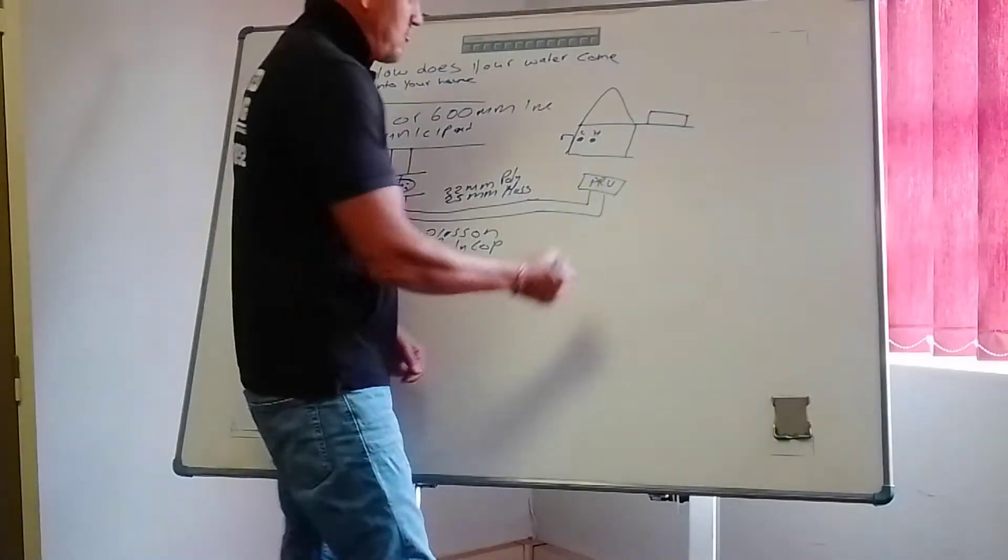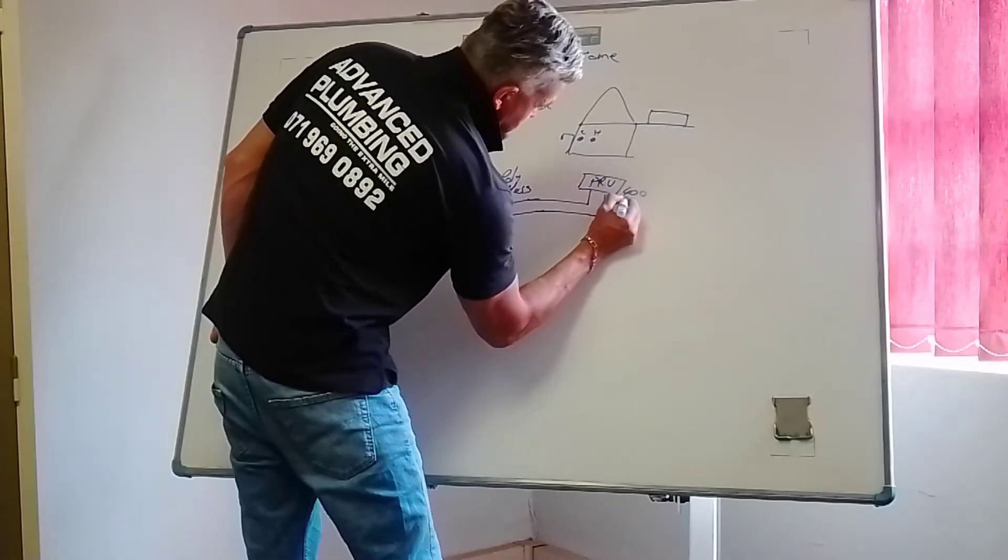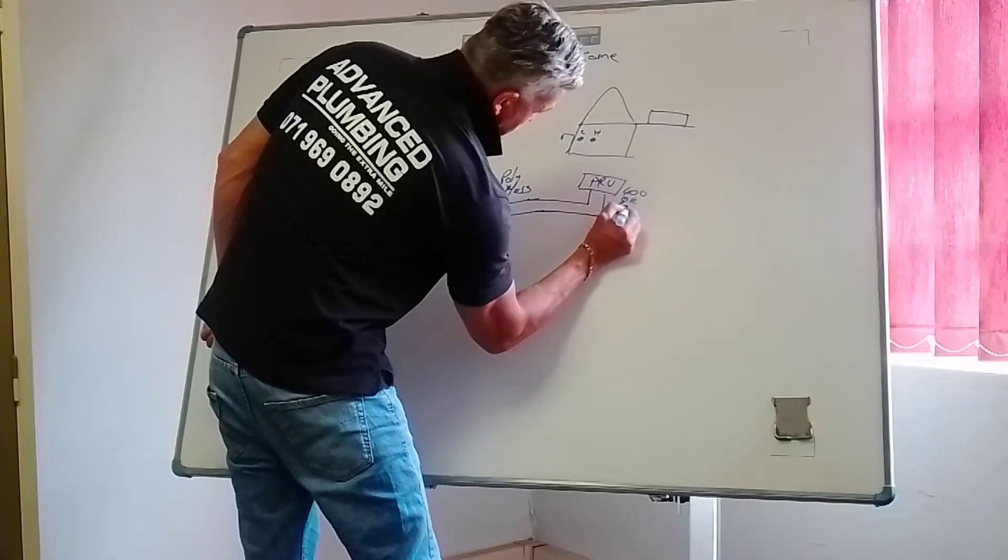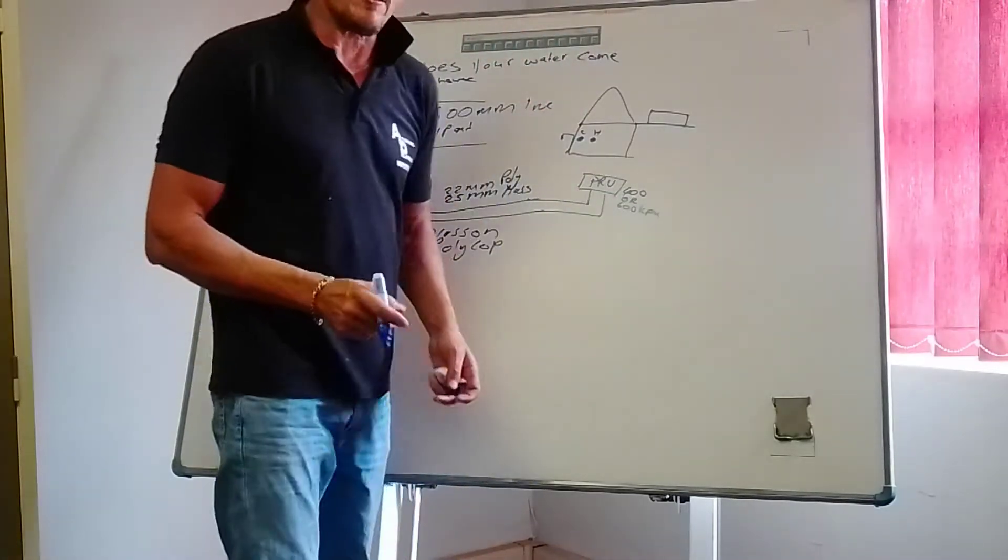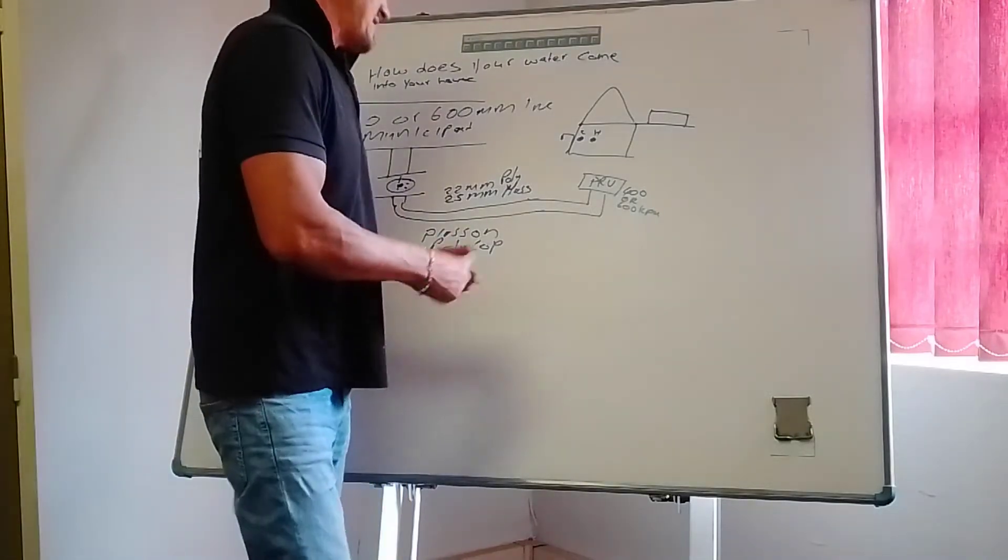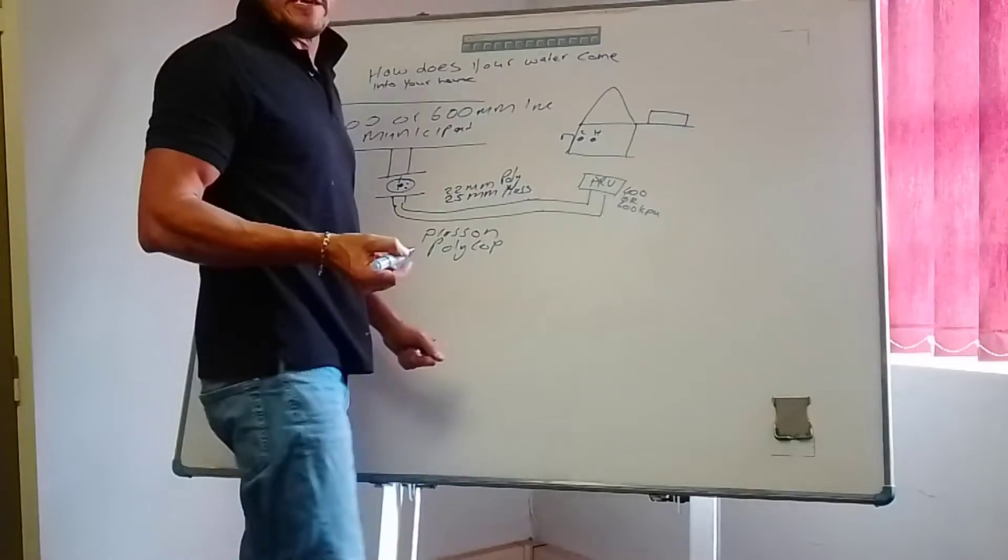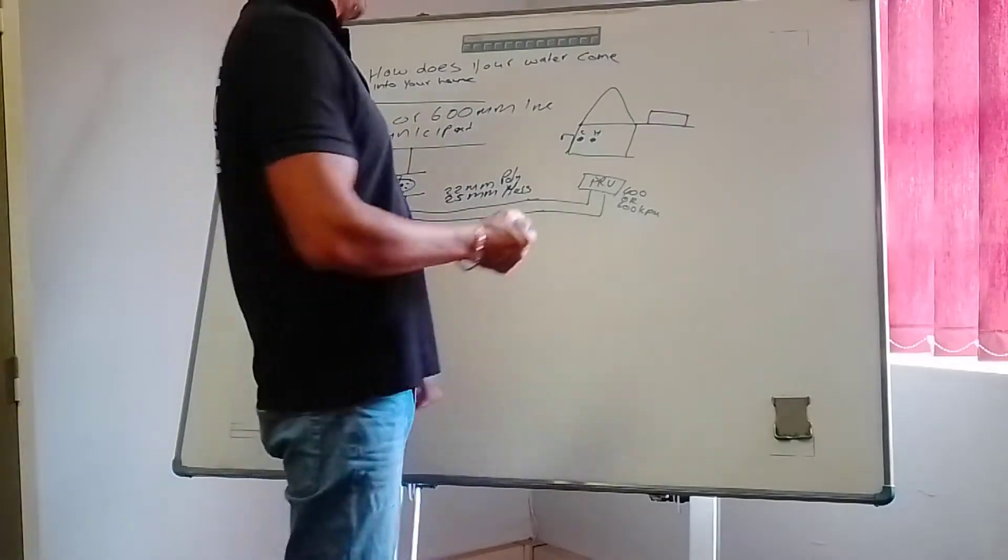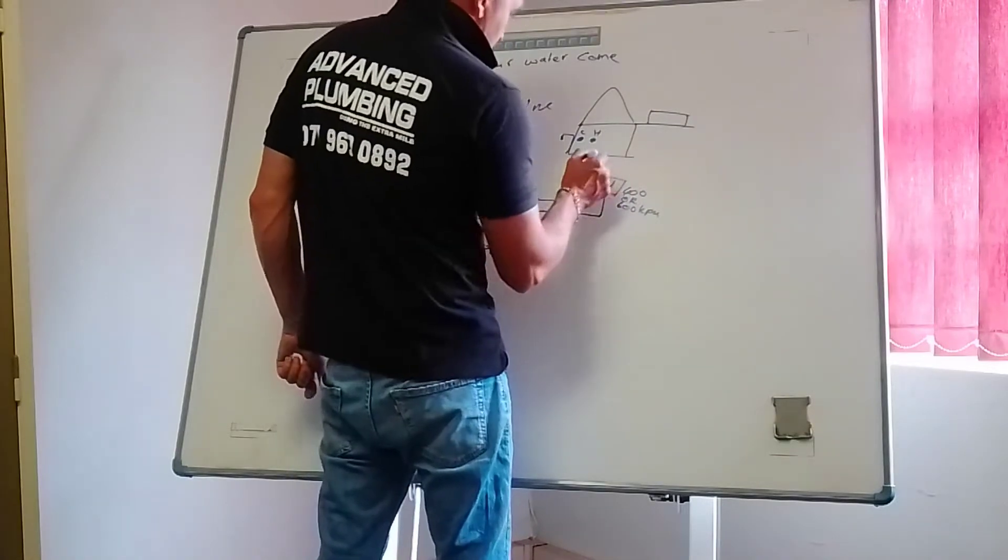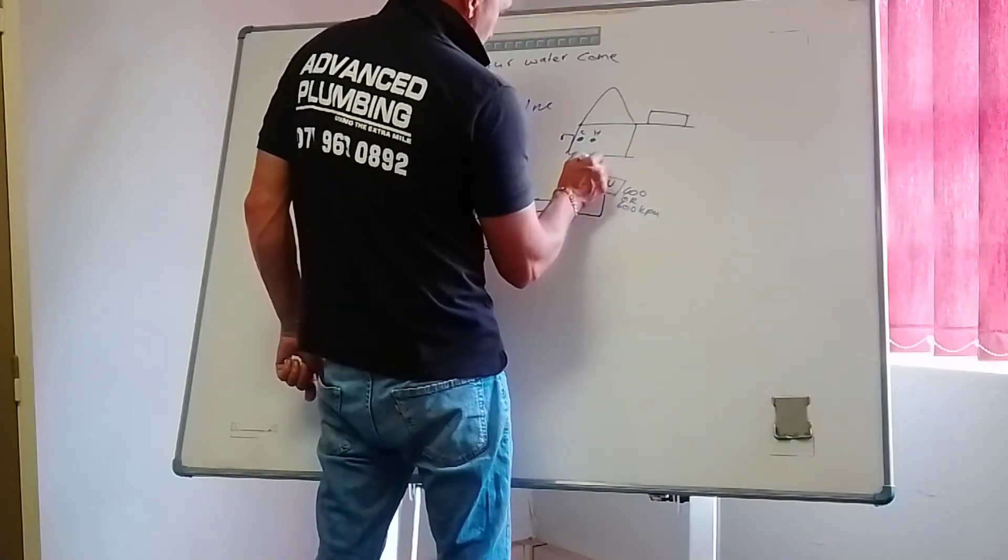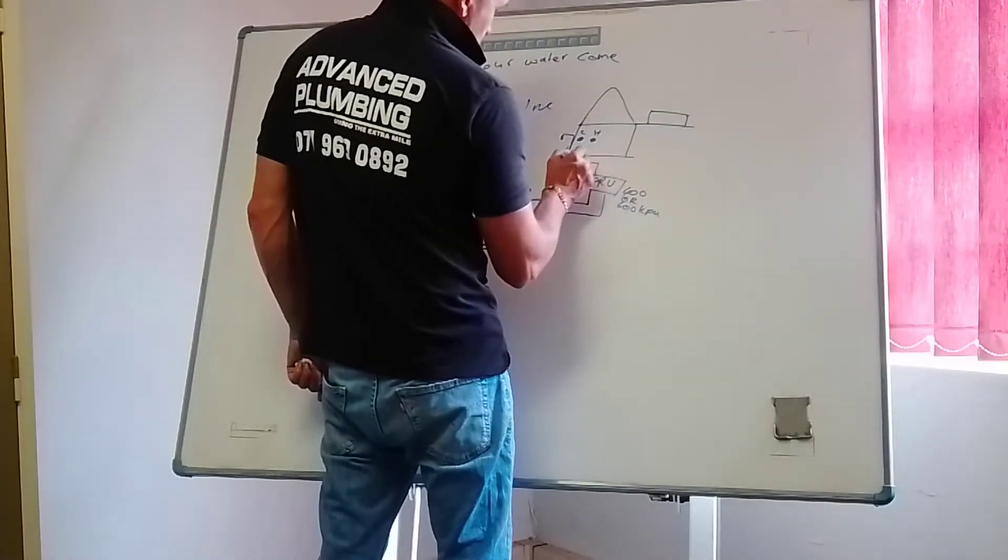What will that do? It will allow 400 or 600 kPa into your house. Don't worry about that too much, it's just the pressure rating for the geyser so it doesn't burst. From the PRV valve, it will go into your garden tap and then it will go into a T-piece here which will go into your cold water.